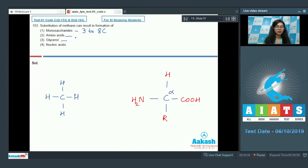Option three, glycerol, is nothing but trihydroxy propane. And lastly, nucleic acids are polymers of nucleotides consisting of pentose sugar, phosphate, and a nitrogen-containing base. The closest structure that can result from substitution of hydrogen atoms of a methane molecule is an amino acid. So the correct answer would be option number two, amino acids.